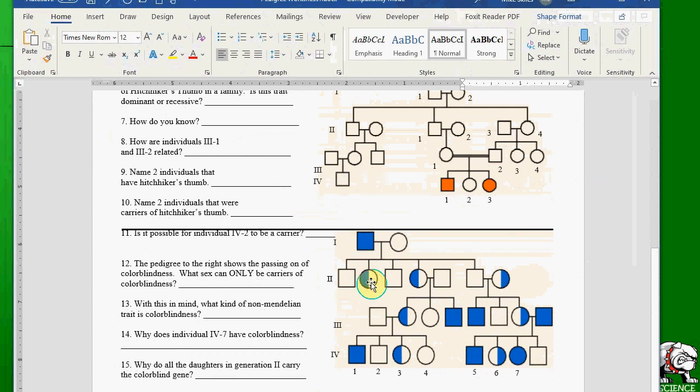And carriers would be half shaded. So this woman here, this female is a carrier of the trait. This female is a carrier of the trait. This female is a carrier of the trait. So that's how you show that right there, is you half fill them.